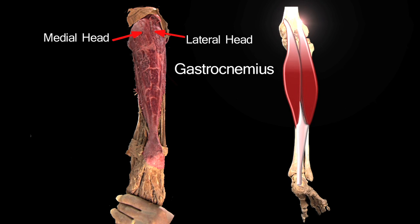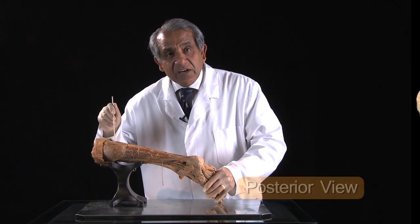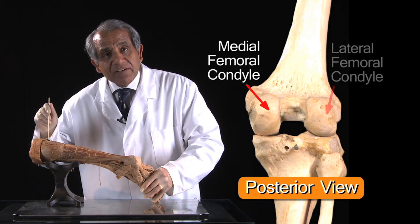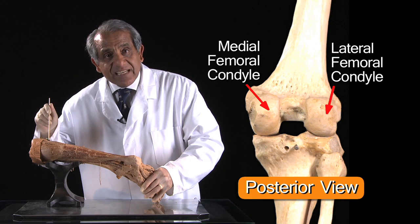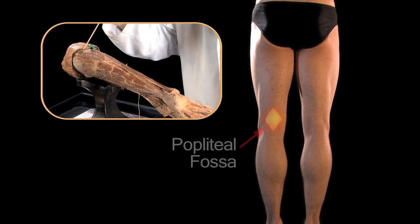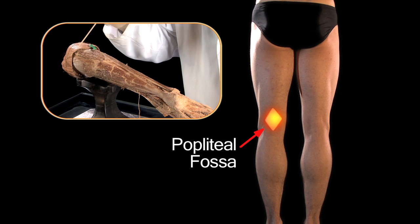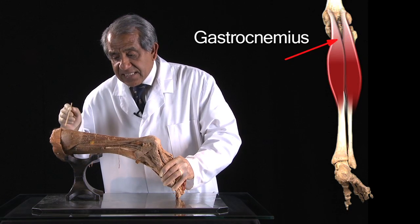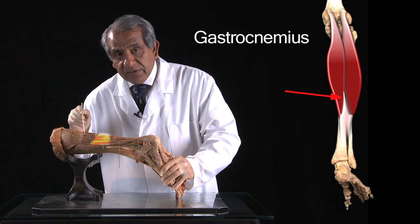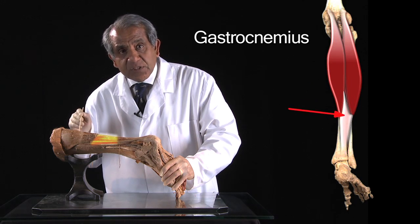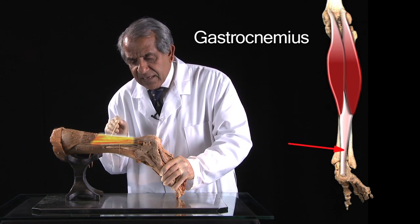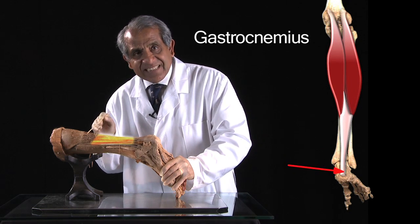These two heads of gastrocnemius arise respectively from the medial and lateral femoral condyles, and proximally they form boundaries of the popliteal fossa. Distally, however, each of these heads becomes an aponeurosis, and the two aponeuroses join to form a single fibrotendinous sheet.